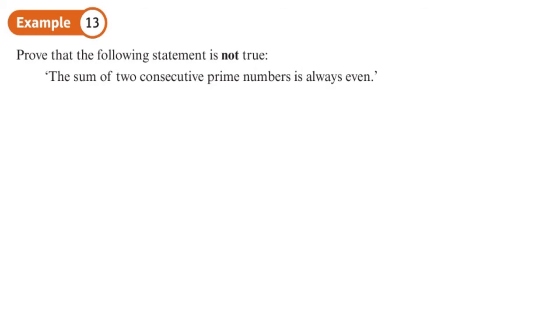Prove that the following statement is not true: The sum of two consecutive prime numbers is always even. Now we can prove it's not true by the use of a counter example. Can we find one example where if we add together two prime numbers, it's not even, it's odd. They need to be prime numbers next to each other. Let's write some prime numbers out and see if I can find two next to each other.